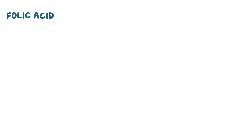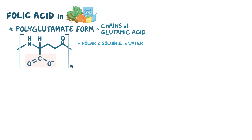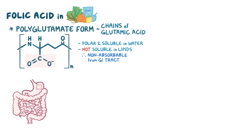Folic acid present in these food items is generally in polyglutamate form, which are basically chains of an amino acid called glutamic acid. Because of these carboxyl groups present in its structure, the chain is negatively charged, making it polar and soluble in water, which is a polar molecule, but not soluble in lipids, which are nonpolar molecules. So the polyglutamate residues of folic acid are almost non-absorbable from the GI tract, where all the cells are surfaced with lipid cell membranes.